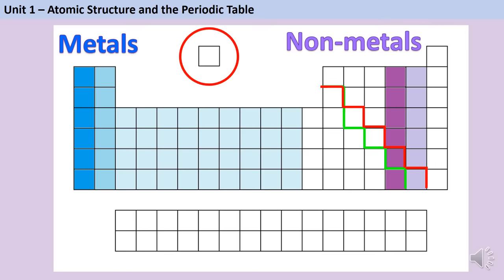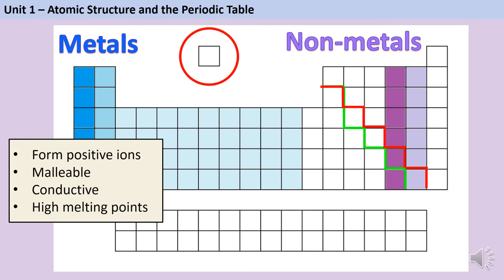The table is called 'periodic' because the same properties recur at regular intervals — counting eight elements from lithium gives sodium, then potassium, all alkali metals with similar properties. Metallic elements form positive ions; metals are malleable, conductive, and have high melting points. The groups of interest for GCSE are groups 1, 2, 6, 7, and the transition metals.